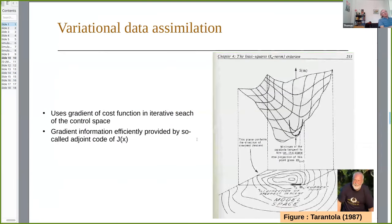We are using variational data assimilation — this was all on Natalie's slides. We use the gradient of the cost function to minimize it efficiently, using adjoint code. This gradient approach is illustrated here in a figure I've taken from one of my favorite books.